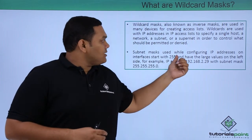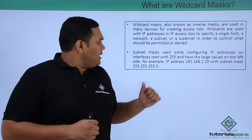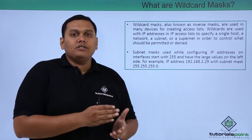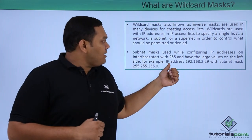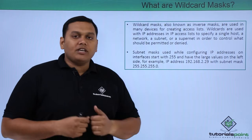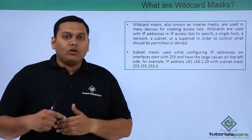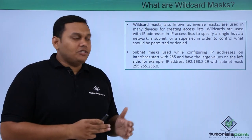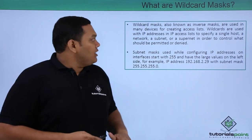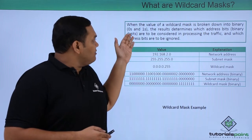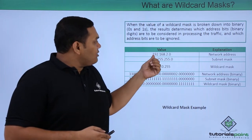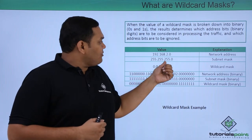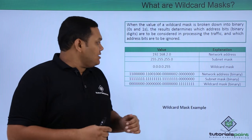The subnet mask used when configuring an IP address on interfaces starts with 255. The wildcard mask is exactly the inverse of the subnet mask. For example, with IP address 192.168.2.29 and subnet mask 255.255.255.0, the network address is 192.168.2.0. The inverse of this subnet mask is called the wildcard mask.